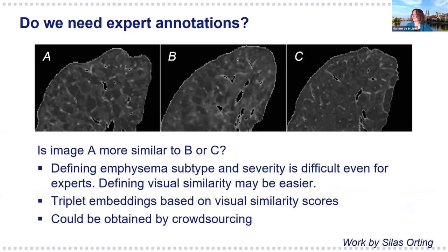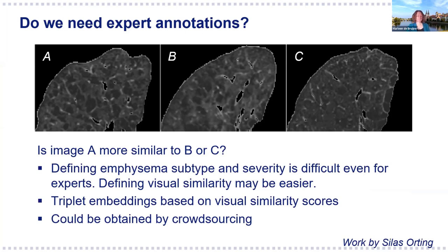We also wondered whether we really need expert annotations. Emphysema scoring is notoriously difficult—even between trained radiologists there is huge disagreement, especially in eyeballing the amount of tissue that is affected, which humans are just not very good at. What might be easier for humans is to assess which two images from a set of three are more similar to each other. If we can learn useful representations from that, we could perhaps have this task done by non-experts, so we also tried whether we could do this by crowdsourcing.